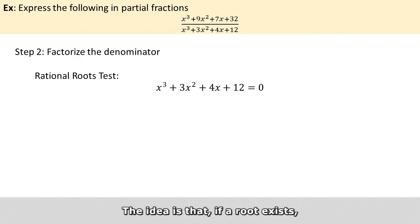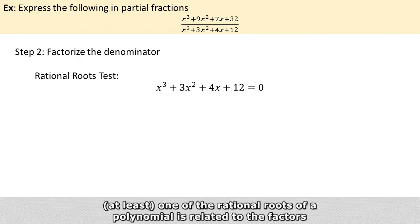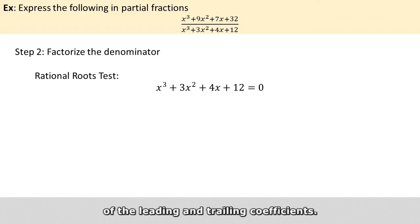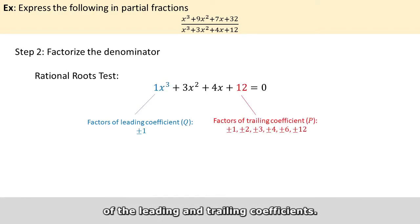The idea is that if a root exists, one of the rational roots of a polynomial is related to the factors of the leading and trailing coefficients. Here the leading coefficient is 1. Its factors are plus and minus 1. For now we denote its factors by the alphabet q.